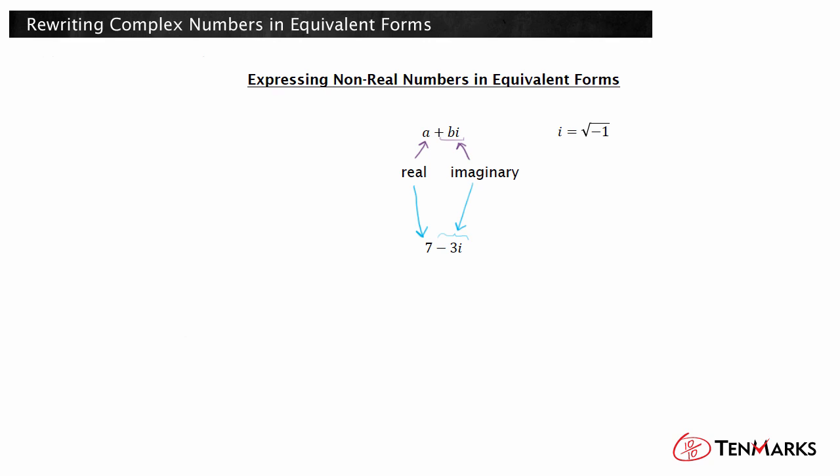Sometimes, an expression must be simplified before the real and imaginary parts can be identified. Since i represents the square root of negative 1, i squared is negative 1. The expression can therefore be simplified, and the real and imaginary parts identified.